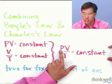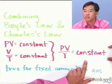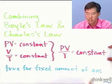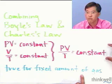I've shown you Boyle's Law, which relates pressure and volume at constant number of moles and constant temperature. And I've shown you Charles's Law, which relates volume and temperature at constant number of moles and pressure. What I'd like to show you now is that we can combine these two laws to get something new — P times V over T is equal to a constant for a fixed amount of gas.